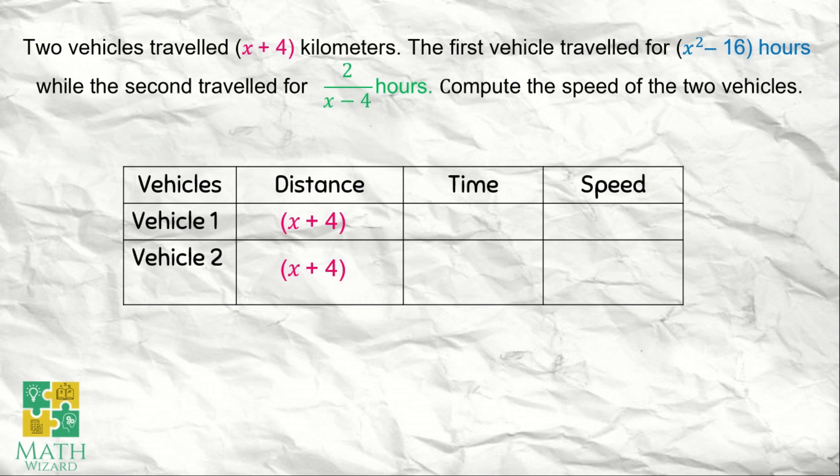Let's move on to time. For vehicle 1, it says the first vehicle traveled for x squared minus 16 hours. Let's write it: x squared minus 16 hours. While the second traveled for 2 over x minus 4 hours. So we've filled in the given values. We have distance and we have time.